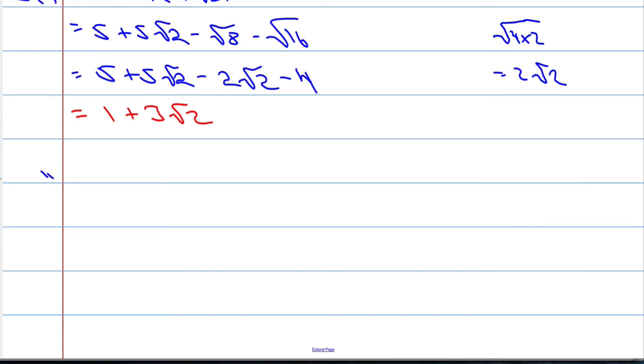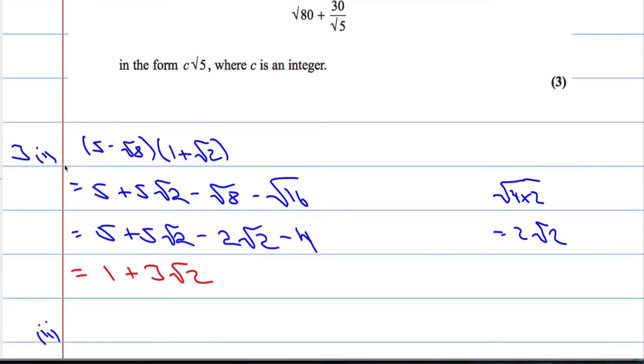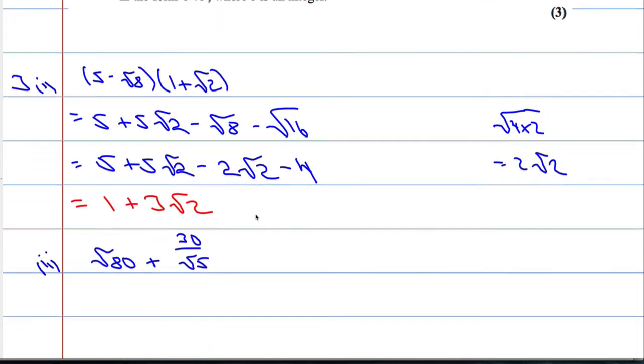Okay, part 2 now. We need to express √80 + 30/√5 in the form c√5 where c is an integer. So essentially we're going to simplify this expression, √80 + 30/√5. I want to simplify this as far as possible.